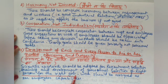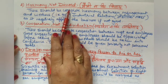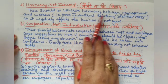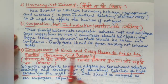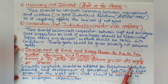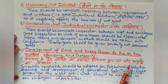The second principle is Harmony, Not Discord. There should be complete harmony between the management and the workers. The top management, middle management, and their planning and objectives must all work in alignment. Management and employees must have a friendly, cooperative relationship.